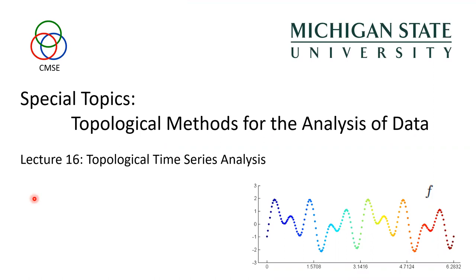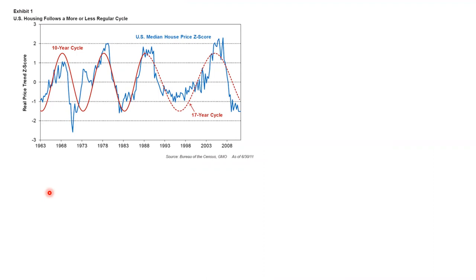Hello everybody. In today's lecture, we're going to talk about an intersection of ideas between topology and the analysis of time series data. Time series are ubiquitous in data science. Many interesting datasets come in the form of time-varying observations. For instance, here is a plot of a dataset describing the U.S. median house price, the z-score, as a function of time. One aspect of this particular dataset is that it has a recurrent pattern. This idea of recurrent patterns or repetitions is going to be a topic that appears several times throughout today's lecture.